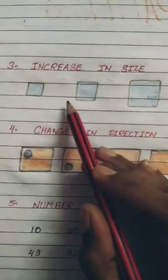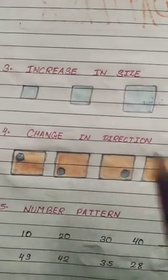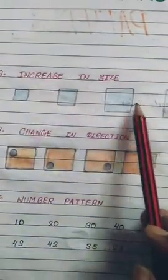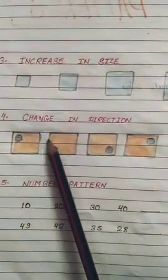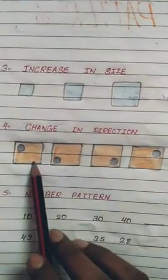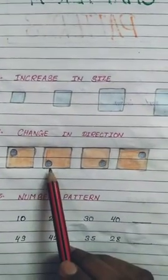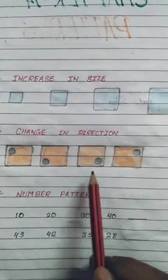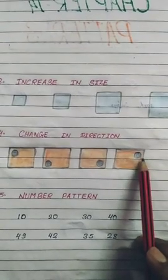And the third one is increase in size. Means the size of the given object increase each time. Like here the square is increasing each time. The 4th one is changing direction. Like here in the 1st picture, the circle is in the top left corner. In the next picture, circle is in bottom left corner, then bottom right corner and then top right corner.